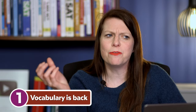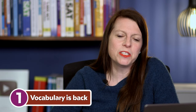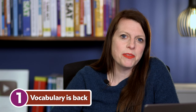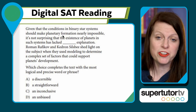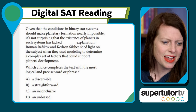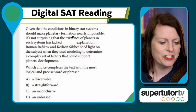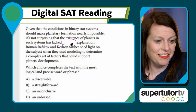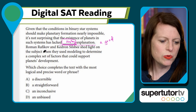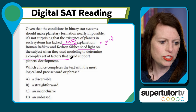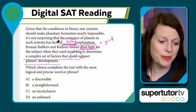Number one: vocabulary is back. We used to see vocabulary on the SAT back in the day — there were sentence completions where you'd fill in a vocabulary word. Here's an example: 'Given that the conditions in binary star systems should make planetary formation nearly impossible, it's not surprising that the existence of planets in such systems has lacked blank explanation.' I'd come up with my perfect word first — something like 'any explanation.' Roman Rafikov and Kendron Silsby shed light on the subject when they used modeling to determine a complex set of factors that could support planet development.